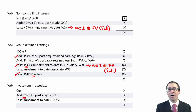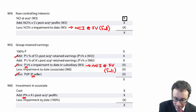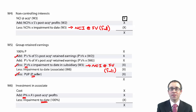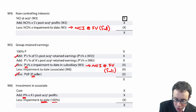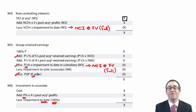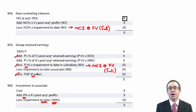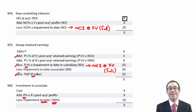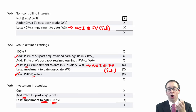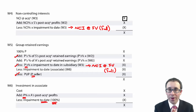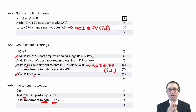You then deduct the impairment to date — an accumulation of all impairments since the date of acquisition. Make sure it's vitally important: just put in 100% of that impairment. Don't take your percentage share, because when the impairment is calculated the calculation has already taken into account your percentage ownership. So whatever impairment is given in the question, use it as given — no percentage adjustments.